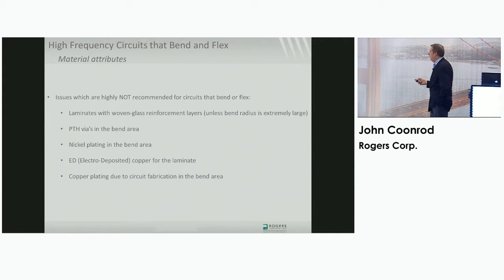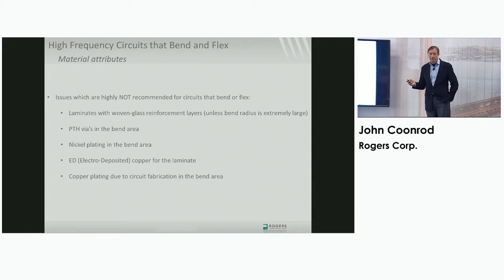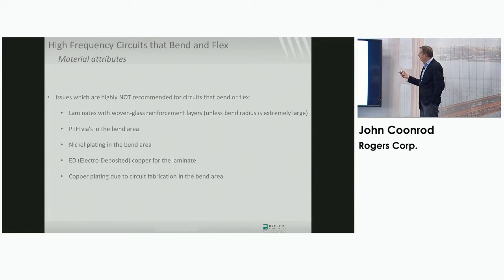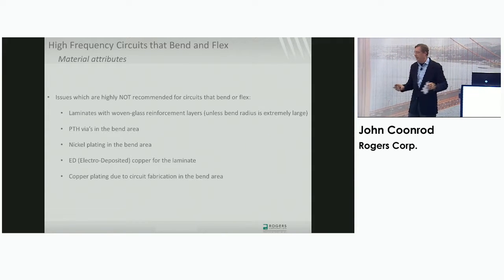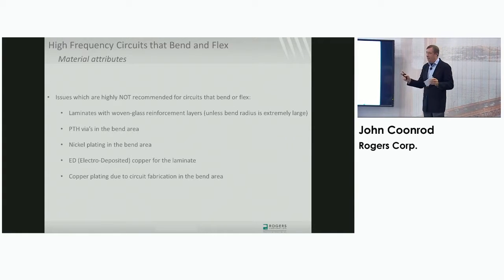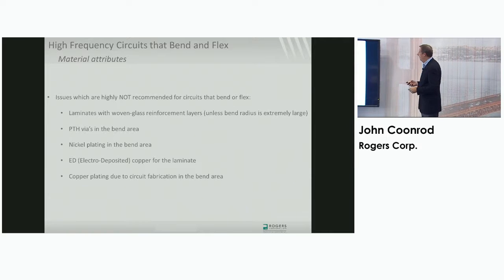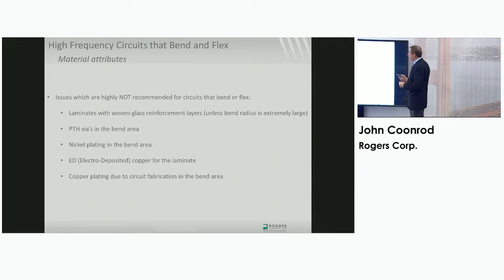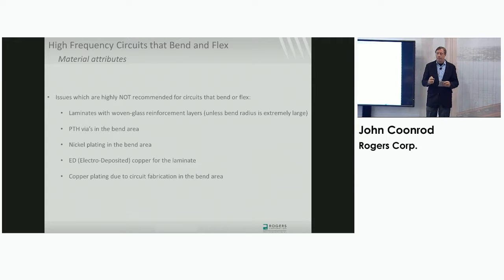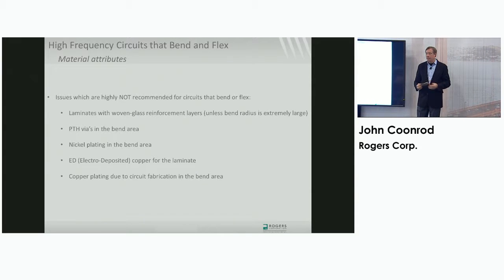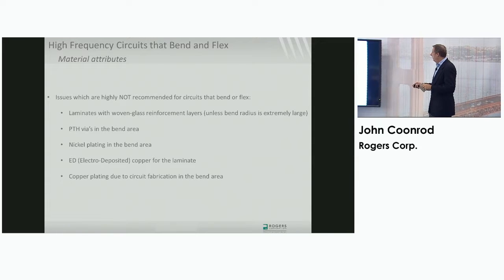These are issues that I'm recommending you not do. The first one is using laminates with glass reinforcement. There's exceptions to just about every one of these. If it's a glass reinforced laminate, I'd say don't use it if you're going to bend and flex it. But if you have to, then a very gentle large bend radius is going to be okay. But again, the best thing is to use a laminate that is non-glass reinforced. The next thing is plated through-hole vias. You do not want to have plated through-hole vias in the bend area. In a lot of RF applications, you have no choice. You need to have a good ground return path. In that case, what you want to do is have the PTH vias away from the signal conductors.